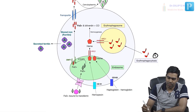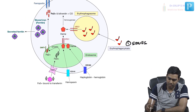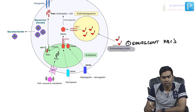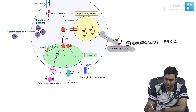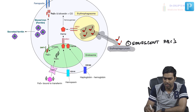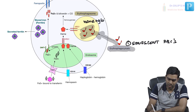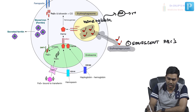The first way is through senescent RBCs. These senescent RBCs undergo a process called erythrophagocytosis. Because of erythrophagocytosis, the RBCs are taken up and ripped apart inside the phagolysosome. Once the RBCs are ripped apart, we get heme and globin. This globin is degraded further into amino acids, which can be recycled.